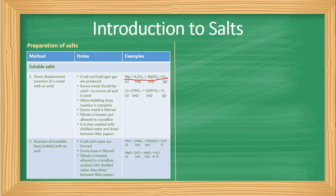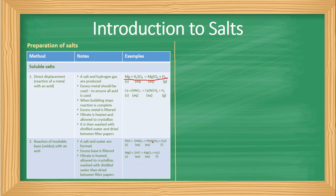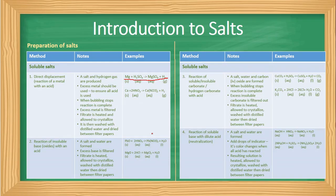The second method is the reaction of an insoluble base, such as a metal oxide, with an acid. A salt and water are formed. Excess base is filtered, the filtrate is heated, allowed to crystallize, washed with distilled water, and dried between filter papers. Examples include lead nitrate — from lead oxide reacted with nitric acid — and magnesium chloride — from magnesium oxide reacted with hydrochloric acid.